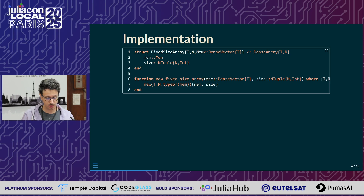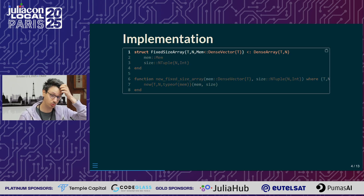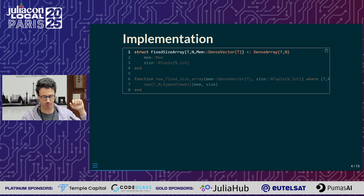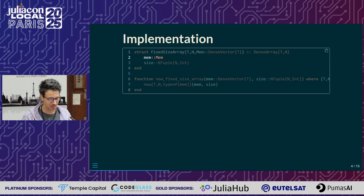So we created this FixedSize Arrays package, and this is the anatomy of the main structure. It's an immutable structure which has three parameters: the type of the elements, the number of dimensions, and the memory backend. Notice that it has one extra parameter compared to the standard array, so if you use the same number of parameters — like the first two — it's not a concrete type.